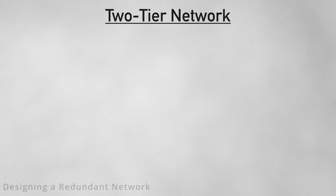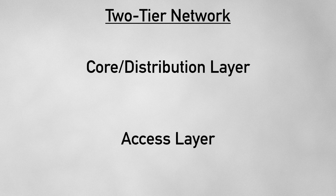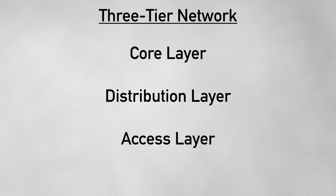When it comes to a redundant network, there are a couple of ways to design it. One way is a two-tier network, comprised of an access layer and a core-distribution layer. The other is a three-tier network, which comprises an access layer, a distribution layer, and a core layer.